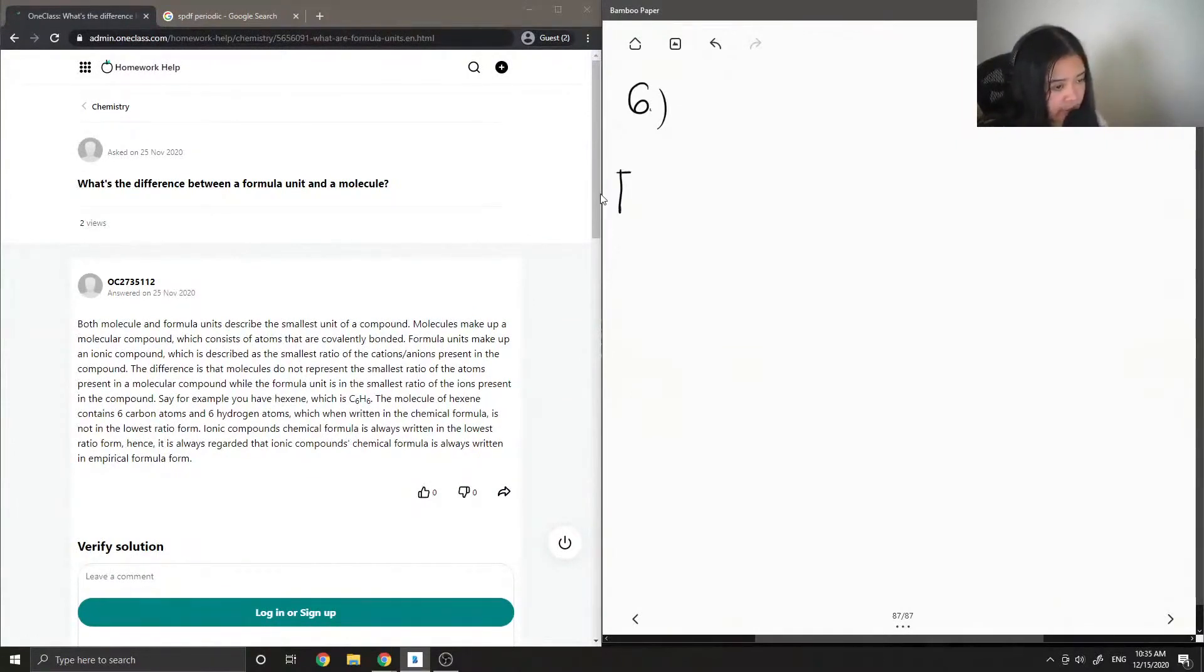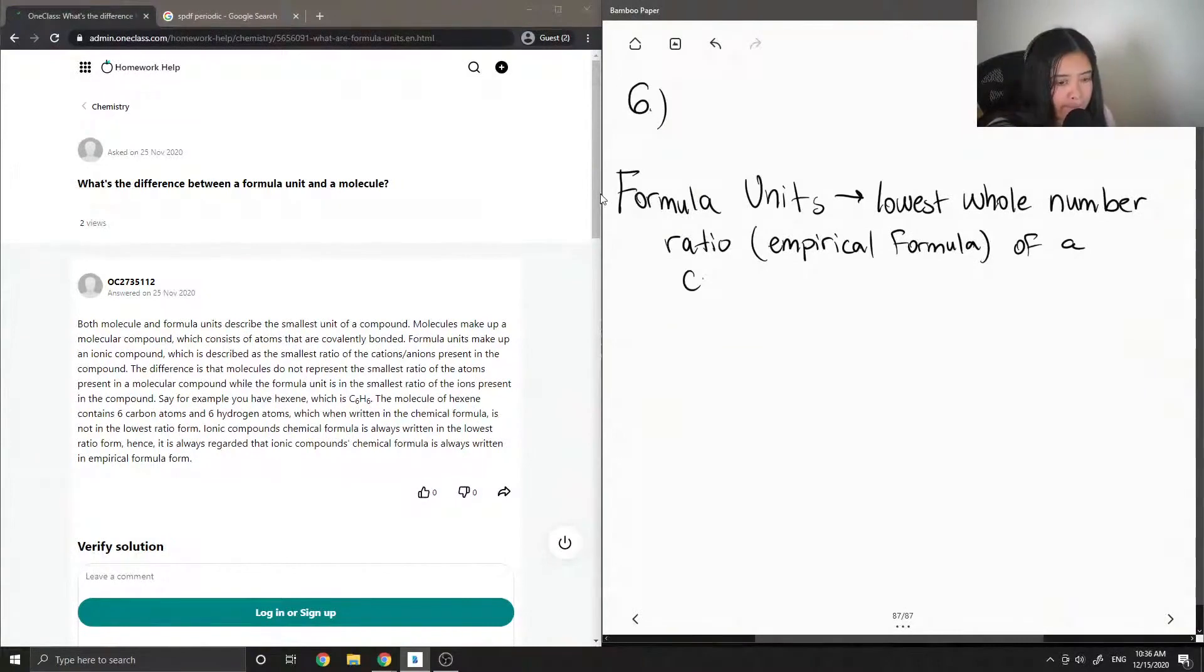So first, I'll just write down the definition of a formula unit. Formula units are the lowest whole number ratio. So this is similar to like the empirical formula. Lowest whole number ratio of a compound with an ionic bond.